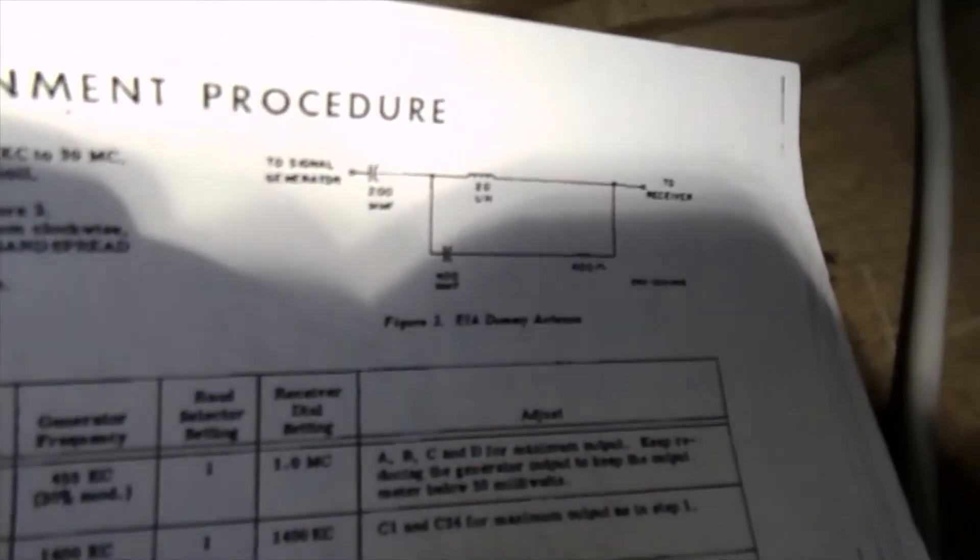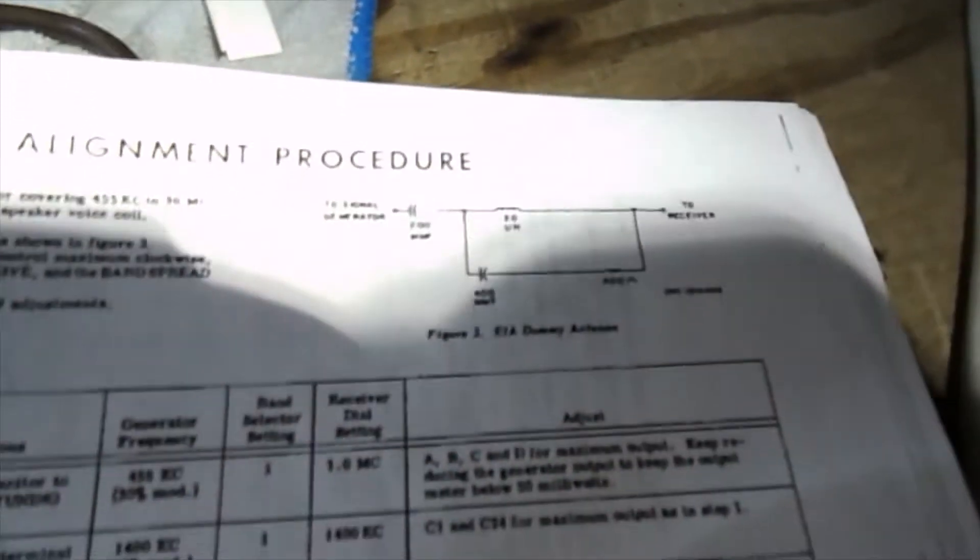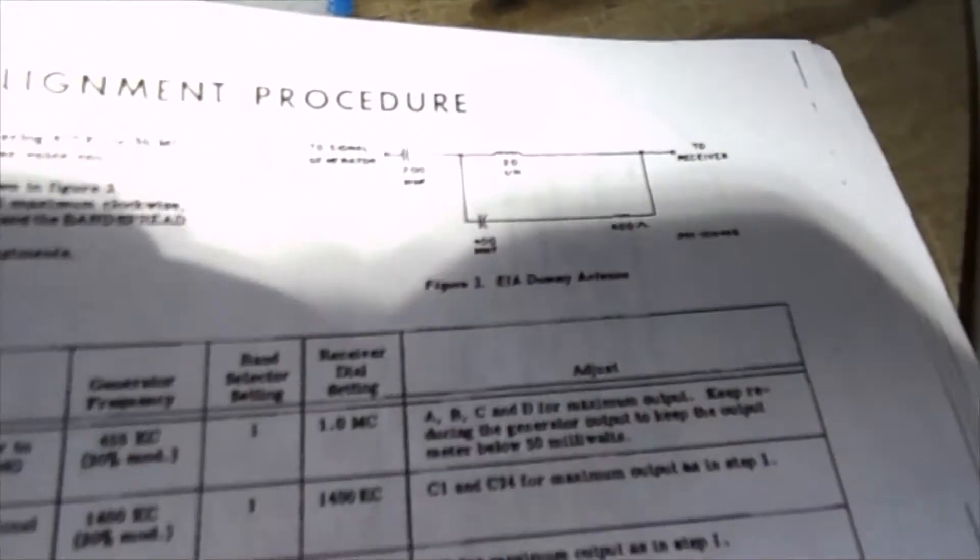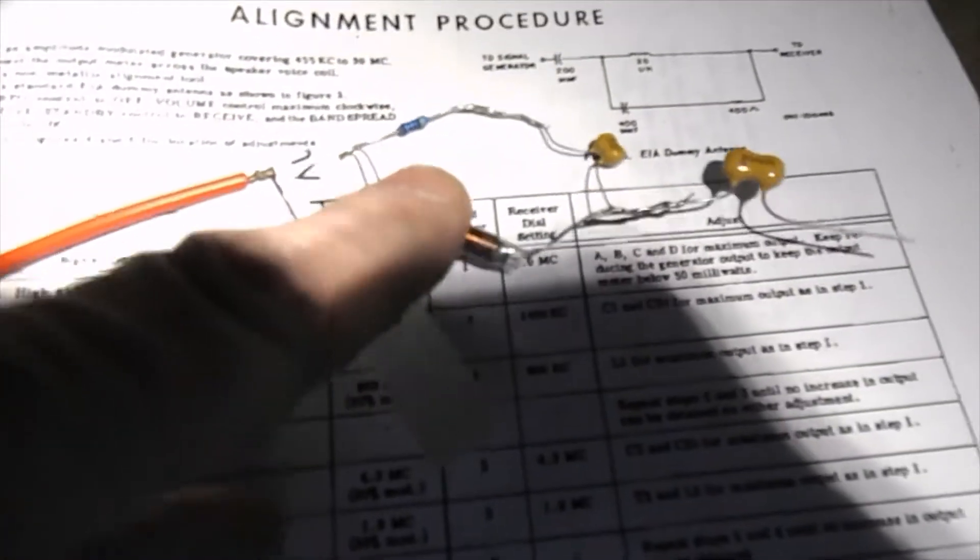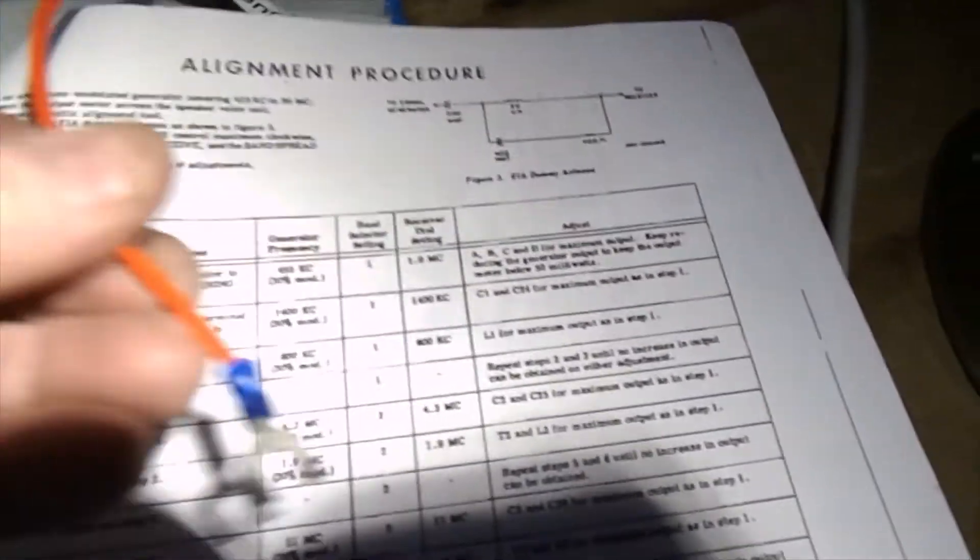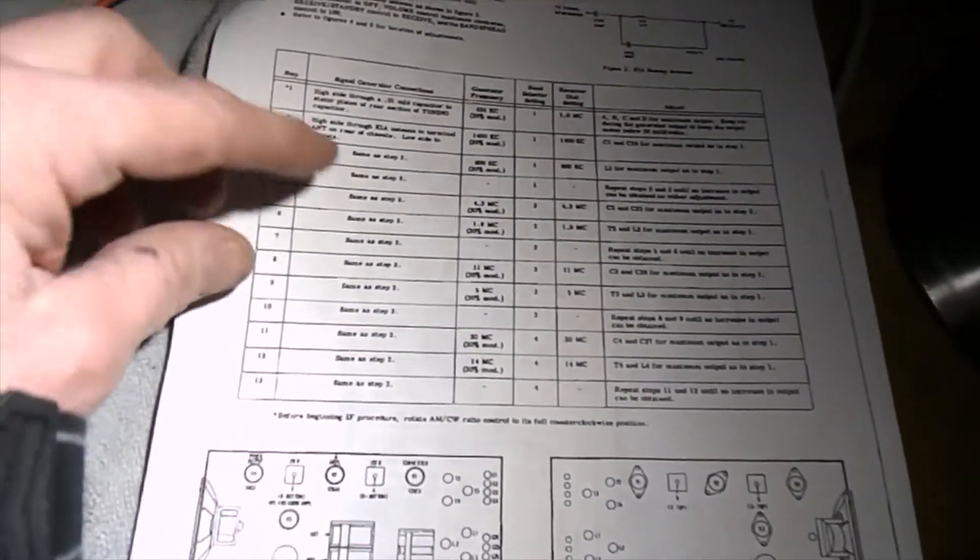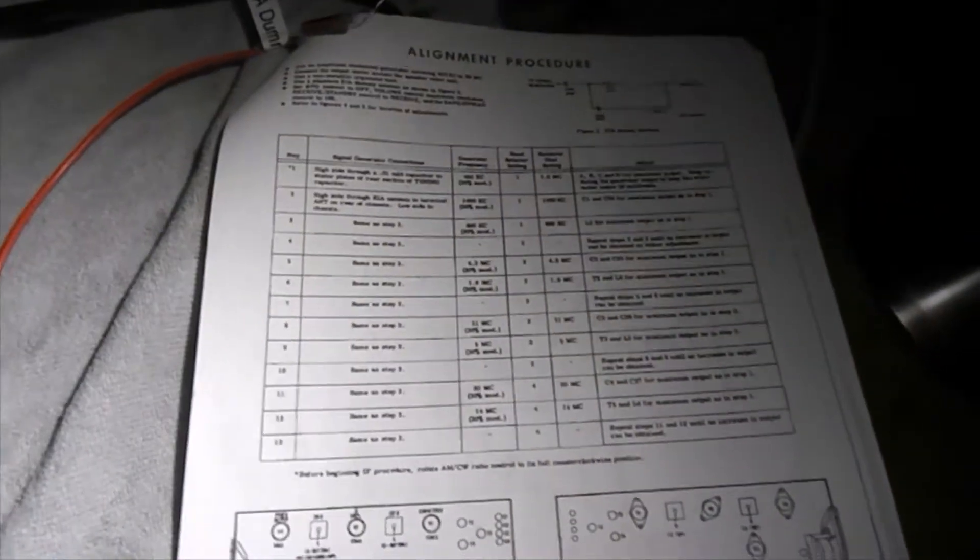It says to build this dummy antenna here which I didn't know how to build until I saw a guy build one for a realistic DX 160. I built one for that and then applied it to this. I won't go into great detail but there's a 20 micro Henry choke, there's a resistor, there's a couple of capacitors and then this thing goes on to the antenna. So you run the signal generator in through here and then you follow the instructions which I will be doing momentarily.